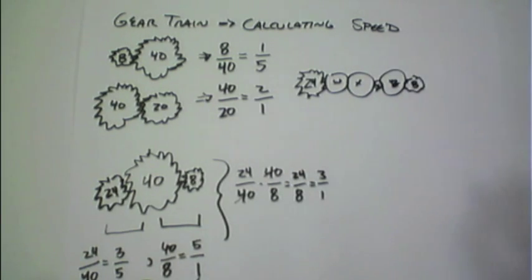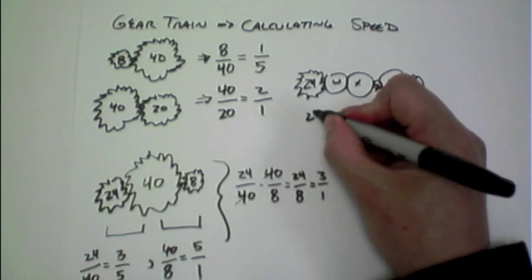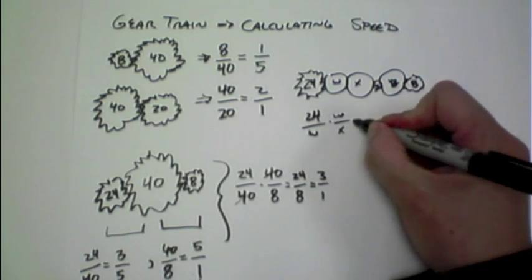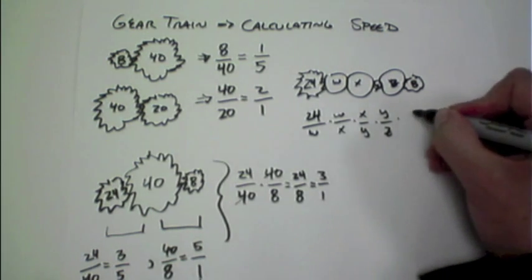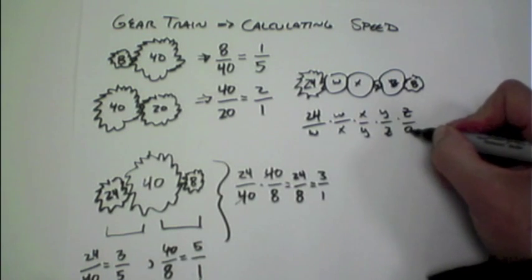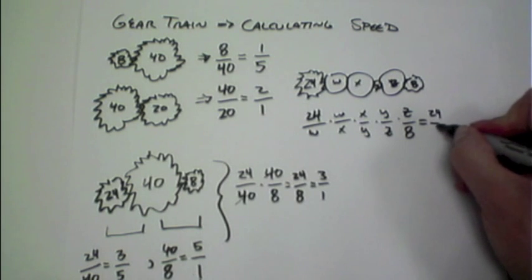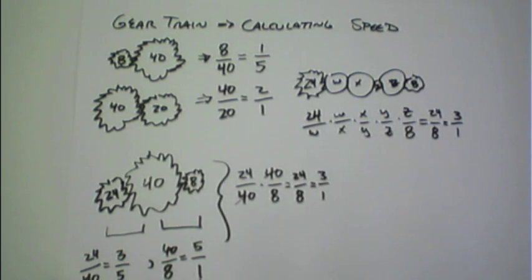If it comes out to the last value, we could do out this math. So this first one is a 24-to-w times a w-to-x times an x-to-y times a y-to-z times a z-to-8. What does that equal? After all the cancellations, 24-to-8, or a 3-to-1, just like we saw here in this example.